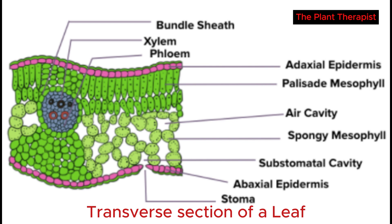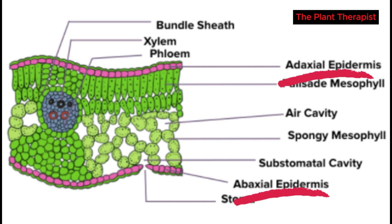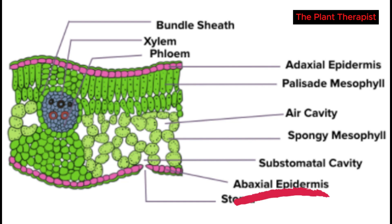The epidermis is a single layer of cells covering the entire surface of the leaf — it is the skin of the leaf. The epidermis on the lower surface of the blade often has more stomata. The function of the epidermis is to protect the delicate tissue inside the leaf.